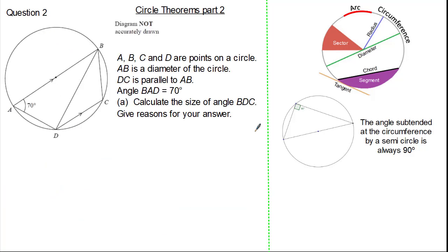Now let's try a trickier question using some key angle facts. The question states points A, B, C and D are points on a circle. We know AB is the diameter of the circle. We also know DC is parallel to AB. We are given angle BAD to be 70 degrees. We are asked to calculate angle BDC and we must give reasons for our answer. Why don't you give it a try? Press pause if you need.